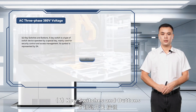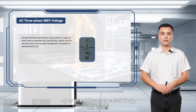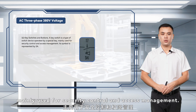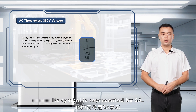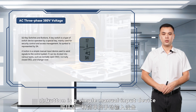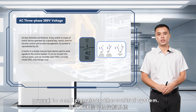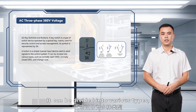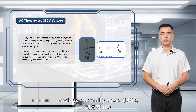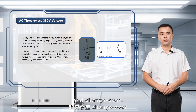Component 6: Key Switches and Buttons. A key switch is a type of switch device operated by a special key, mainly used for security control and access management. Its symbol is represented by SA. A button is a simple manual input device used to send signals to the control system. It can be divided into various types, such as normally open, normally closed, and changeover.